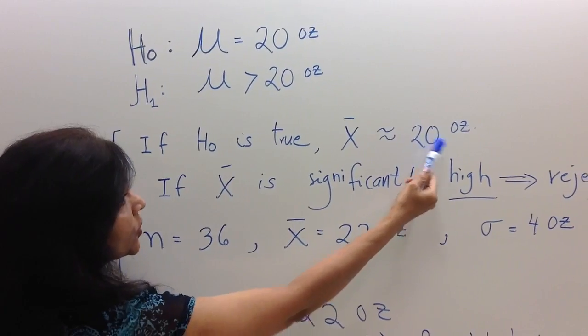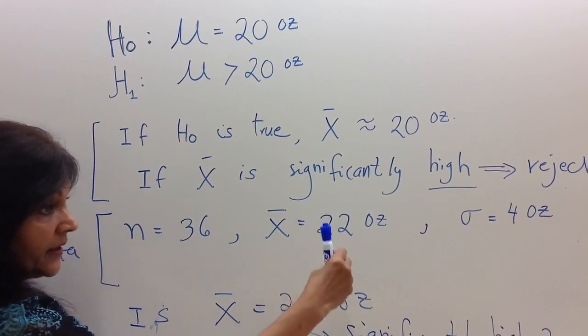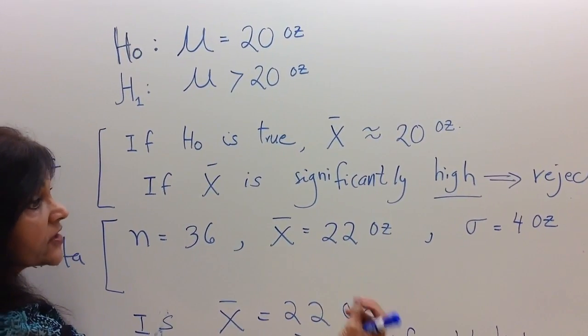the sample mean should be close to 20 ounces, because sample mean and population mean are expected to be close.